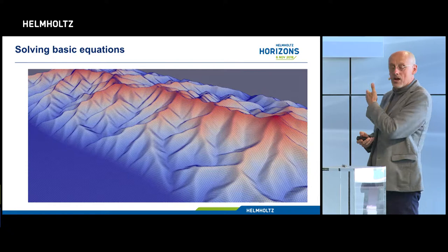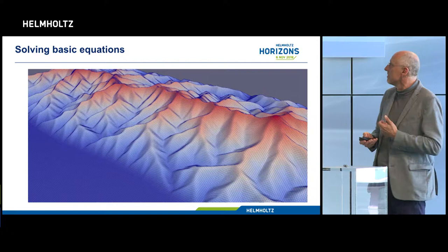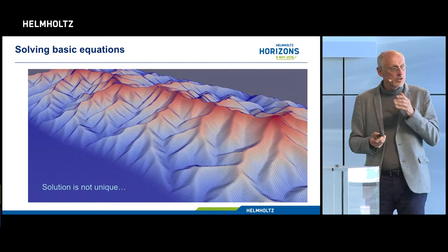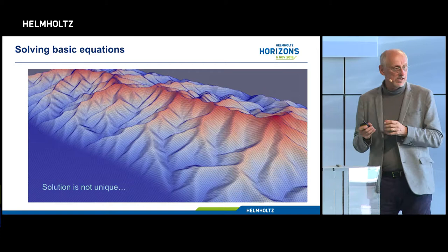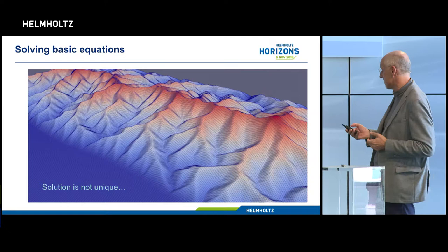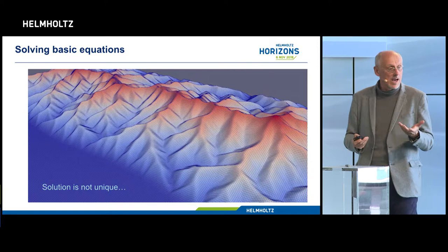One specialty of our group at GFZ has been to develop highly efficient methods to solve this equation. We can represent 10 million years of Earth history in a mountain in typically 30 seconds on a laptop. We need this efficiency because the solutions are not unique — a slight difference in the initial condition would change the details of the landscape. Many landscapes that are supposed to look the same actually look very different just because of random processes. So how can we figure out how a landscape was formed — under which tectonic settings or climate? Yes, climate matters.